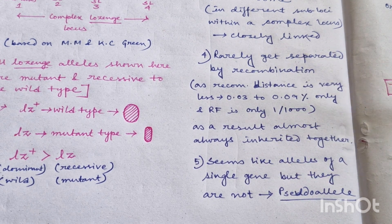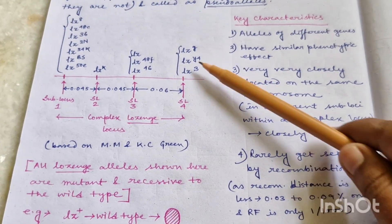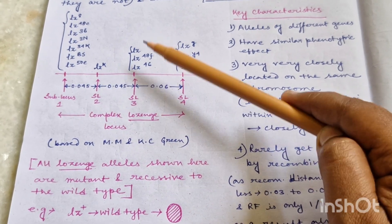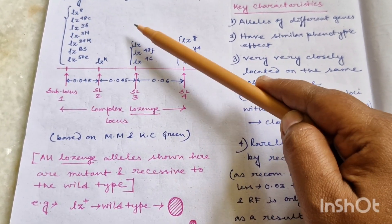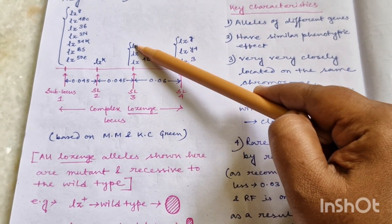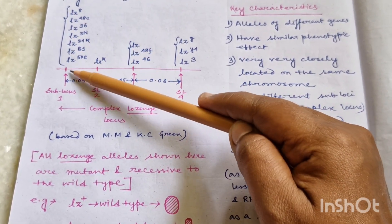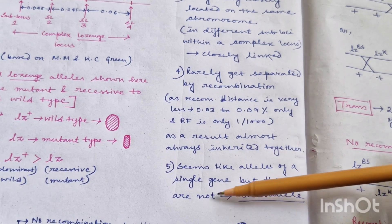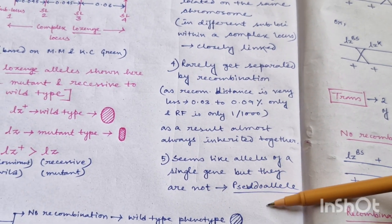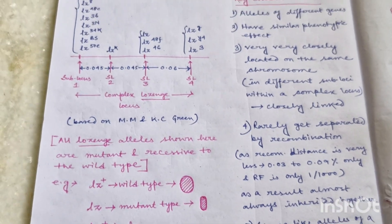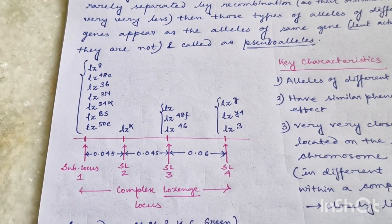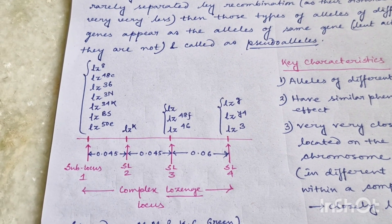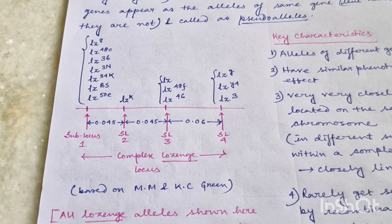Due to that, we may confuse that LZ and LZ8 are the alleles of the same gene, because they are very closely located and they affect the same phenotype. But it is not the fact — they are actually the alleles of different genes. LZ8 is the allele of the gene present at sublocus one, whereas LZ is the allele of the gene present at sublocus three. Though they seem as the alleles of a single gene, they are not — that is why they are known as pseudoalleles. This observation is based on experiment by M.M. Green and Casey Green.